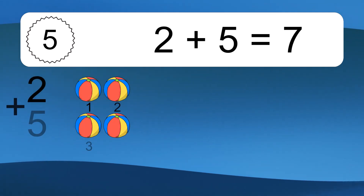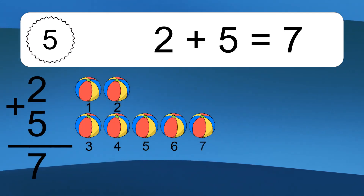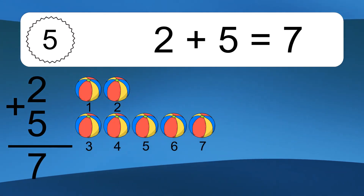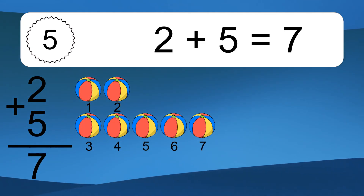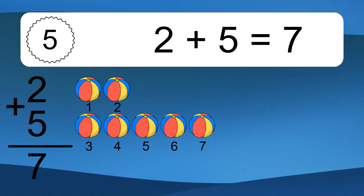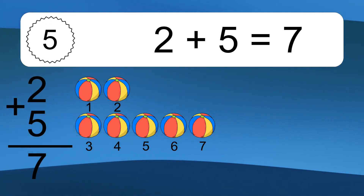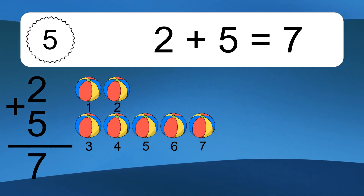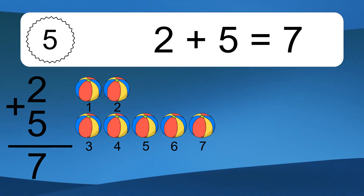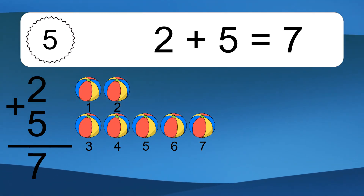2 plus 5 equals 7. Let's count it. 1, 2, 3, 4, 5, 6, 7.